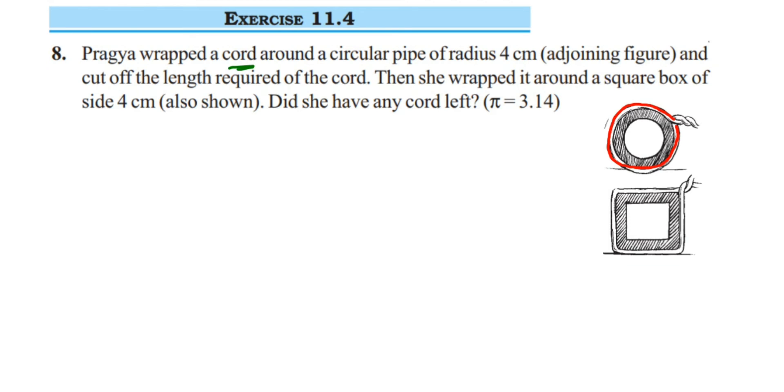We're going to find out the circumference of the circular pipe using the radius which is given. Since the same cord is used, they're not removing anything, they're just asking if the cord is left or not. So we're going to find out the perimeter of the square box and compare if the cord is left or not.